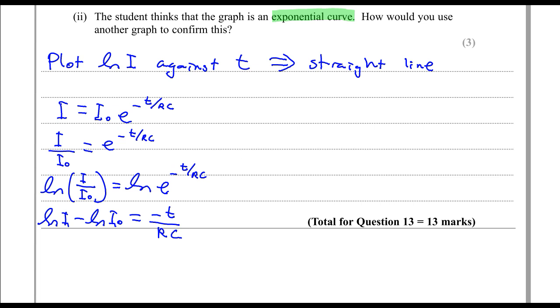And rearranging this, we can write ln i is equal to minus 1 over RC times t plus ln i0.